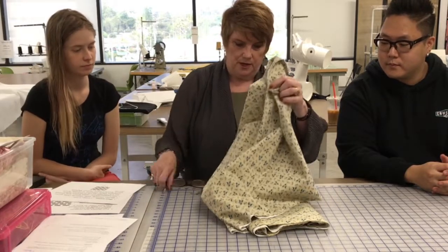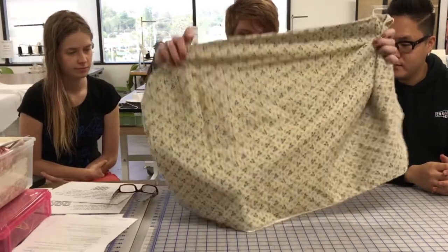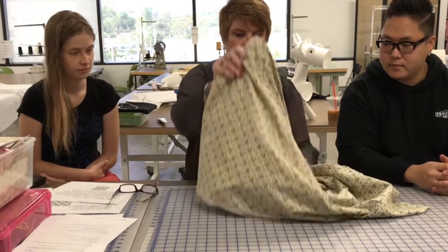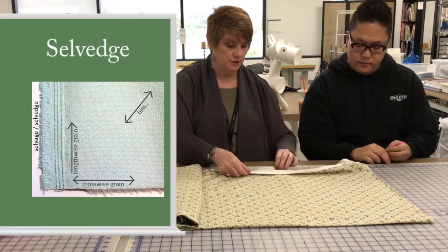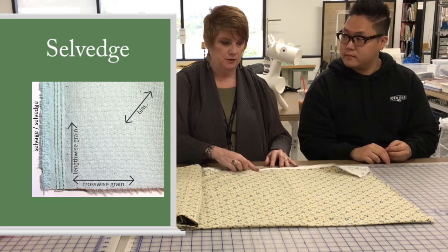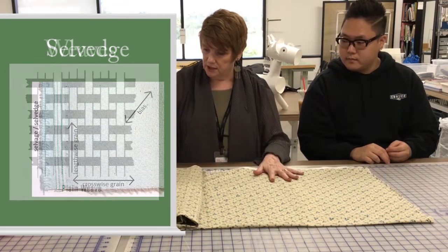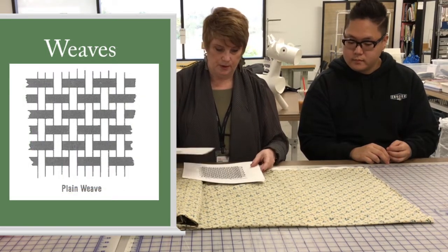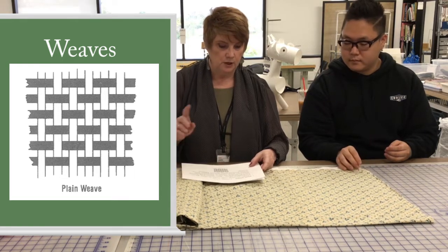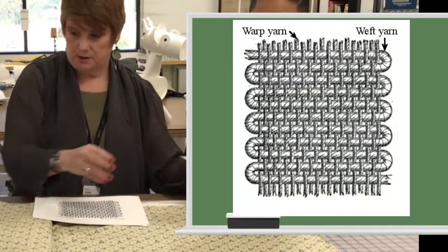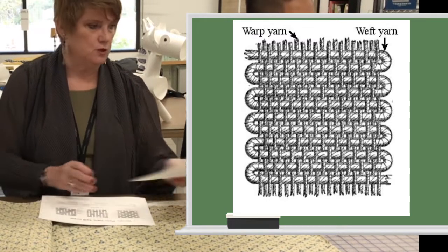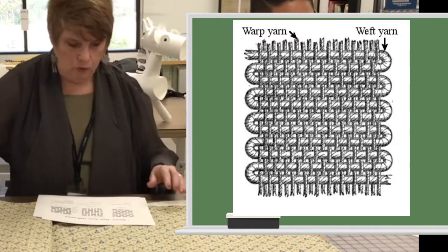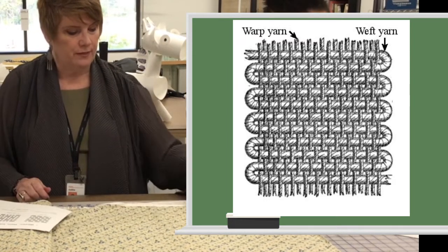We're going to start by talking about plain weaves and fabric terminology. The way the fabric comes off the bolt — this is the selvedge, which is the manufactured edge. On plain weaves, the pattern is one under, one over. There's a warp and a weft, and the warp goes with the selvedge.